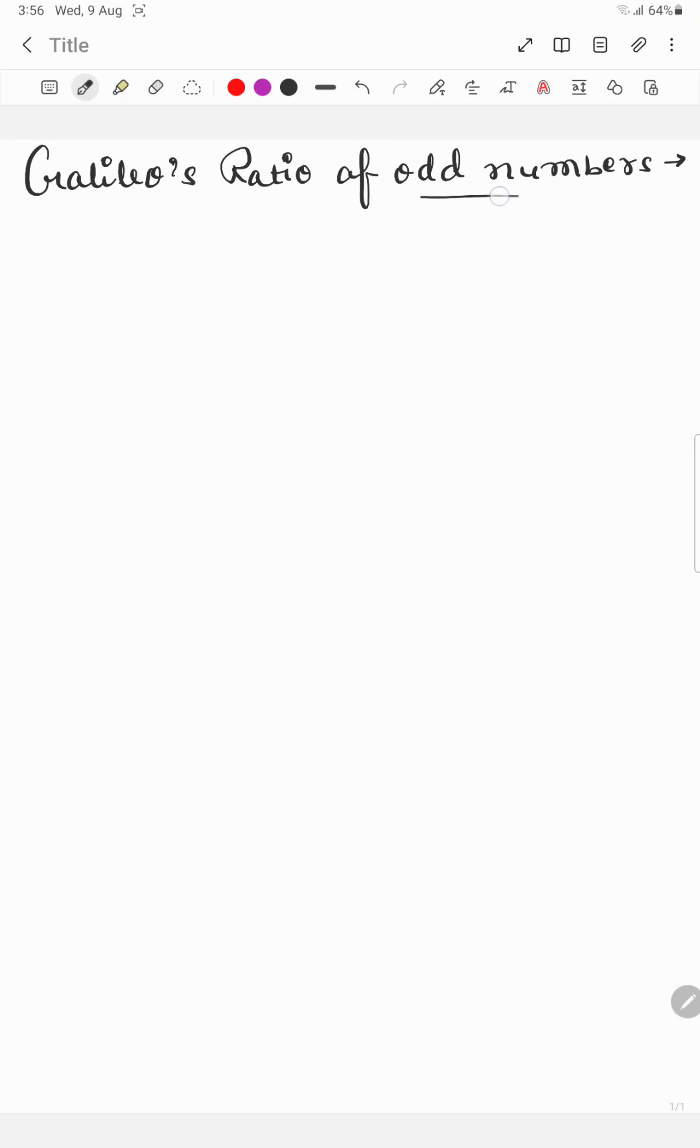They use ratio of odd numbers. What is this ratio? It is 1 is to 3 is to 5 is to 7. And how is it derived?